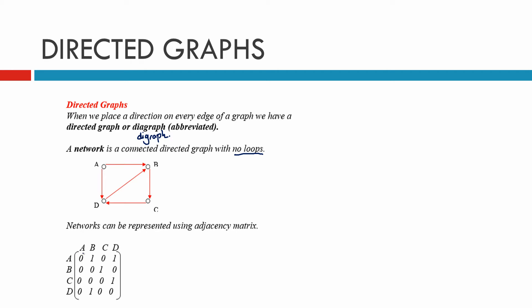Just to quickly go through it: A to A, there is no connection. There is one connection between A and B. No connection between A and C, and one connection between A and D, and so on. Remember, this is directed, so it doesn't go the other way as well.